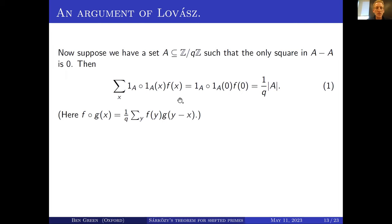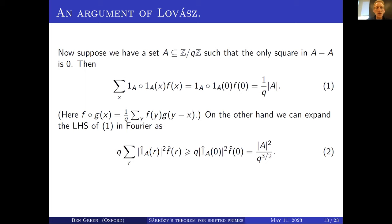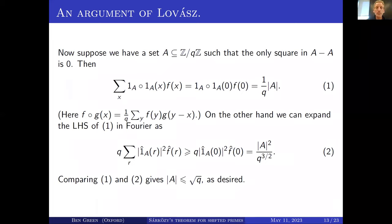You can take the Fourier transform of that expression and use the Plancherel identity. The Fourier transform of the convolution is the square of the Fourier transform of A. So the left-hand side, once you've worked out the normalizations, is a sum where everything is non-negative — since |Â| is non-negative and F̂ is real and non-negative. You can throw away all terms except r = 0, and what you get is |A|²/Q^{3/2}. Comparing those two expressions gives |A| ≤ √Q.